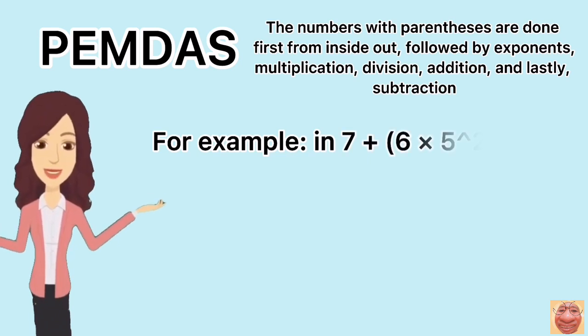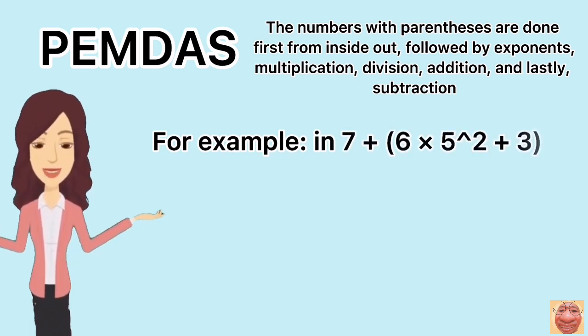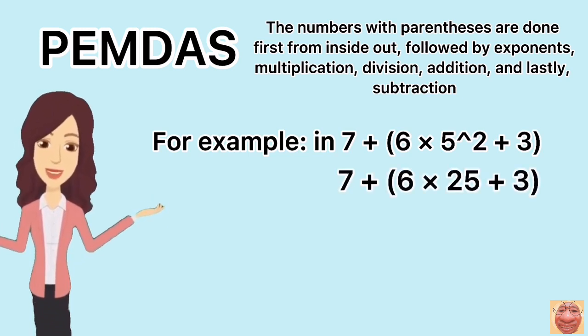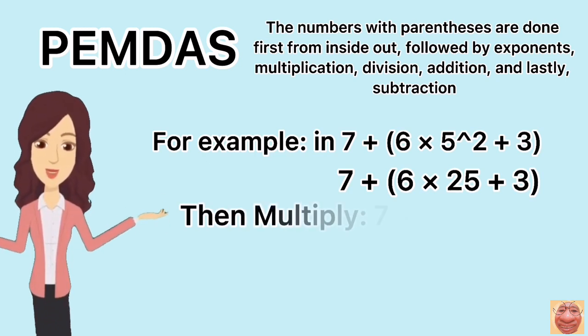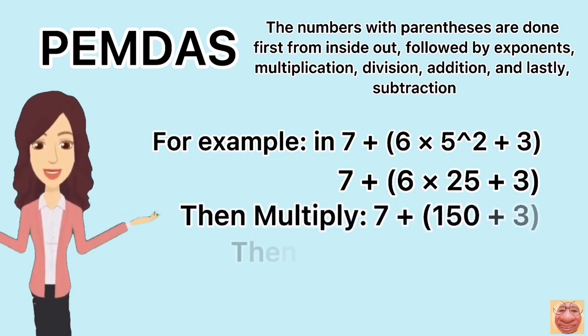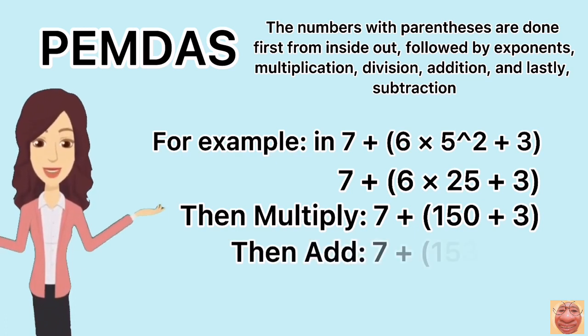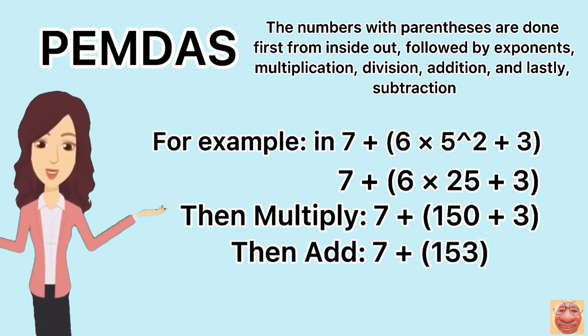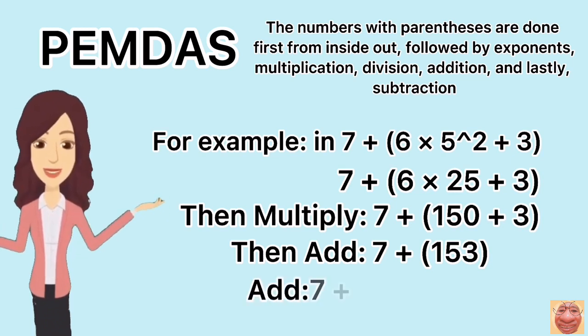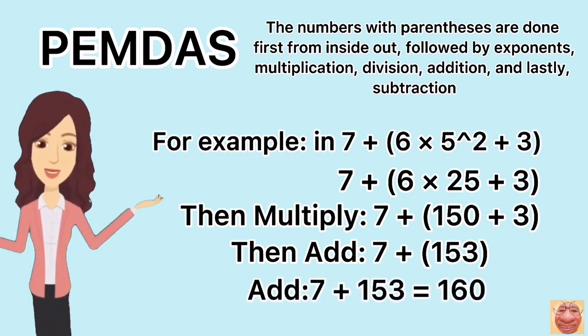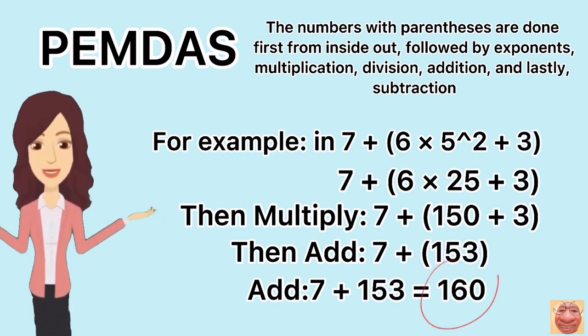For example, in the equation 7 plus parentheses 6 times 5 squared plus 3, start with parentheses first. And then the exponent, which is the 5 squared, so it will become 7 plus parentheses 6 times 25 plus 3. Then multiply 6 times 25 together, it will turn out 7 plus parentheses 150 plus 3. Then add 150 plus 3, it will become 7 plus 153. When parentheses are completed, the last operation according to PEMDAS is to add 7 plus 153 together. So, the correct and final answer will be 160.